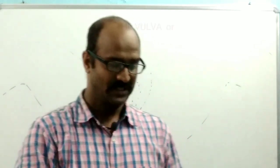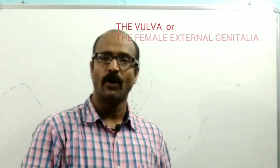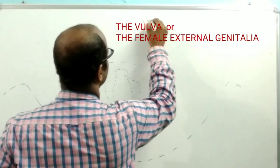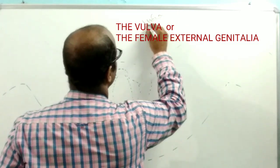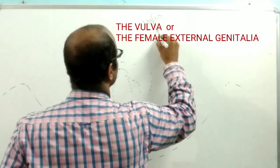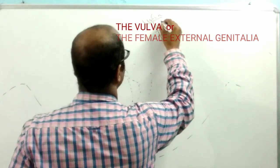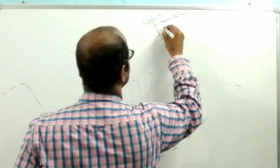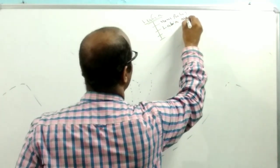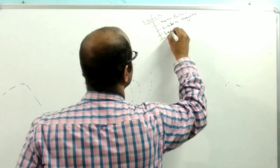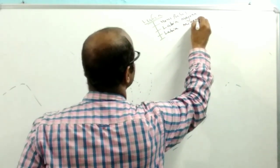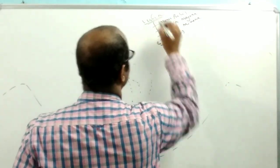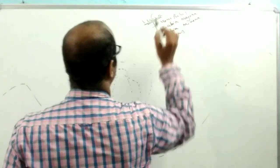Hello, welcome to my another session. In this session I have a talk about the female external genitalia, which is known as the vulva. The female external genitalia has different parts like mons pubis, labia majora, labia minora, and clitoris. These are the different parts of the vulva.